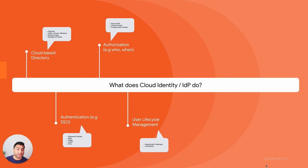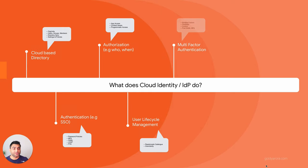If that user leaves and you suspend them in Google Cloud Identity, deprovisioning will take place in all configured applications. You can also have multi-factor authentication — Google calls it two-step verification. MFA means more than one factor; two-step verification means a credential set (email and password) plus a second factor such as SMS, voice, push notification, authenticator, or a security key. The best part is you don't need to invest anything additional — it's part of the Cloud Identity subscription.